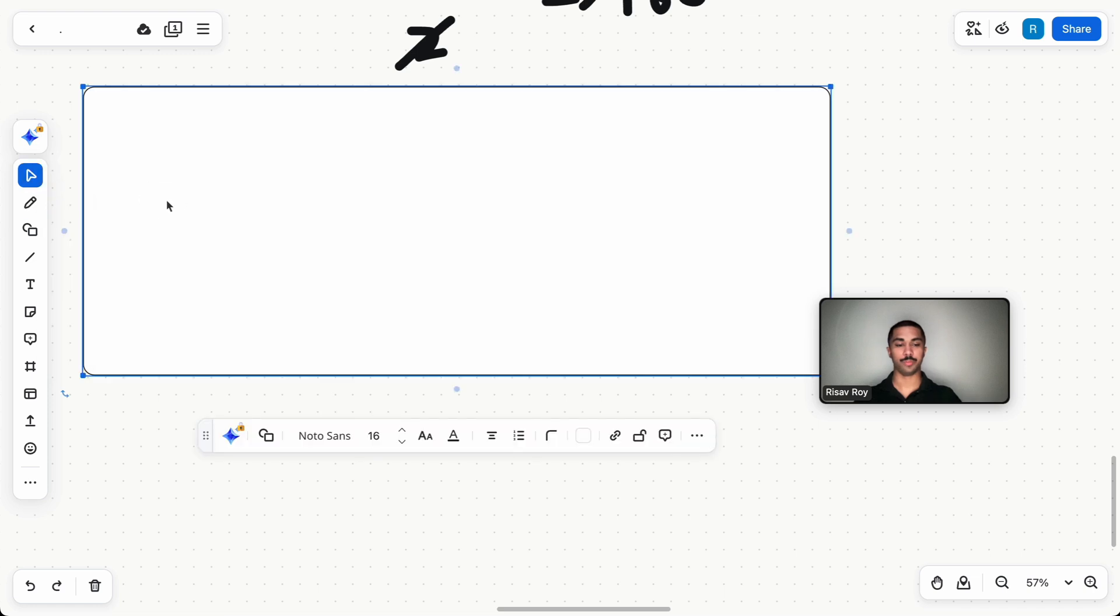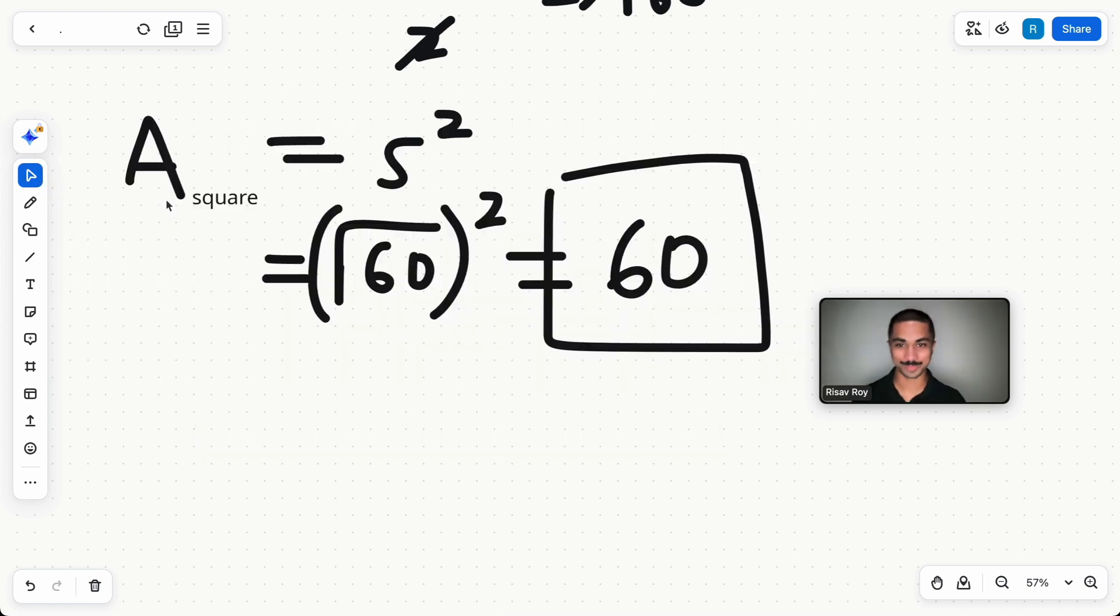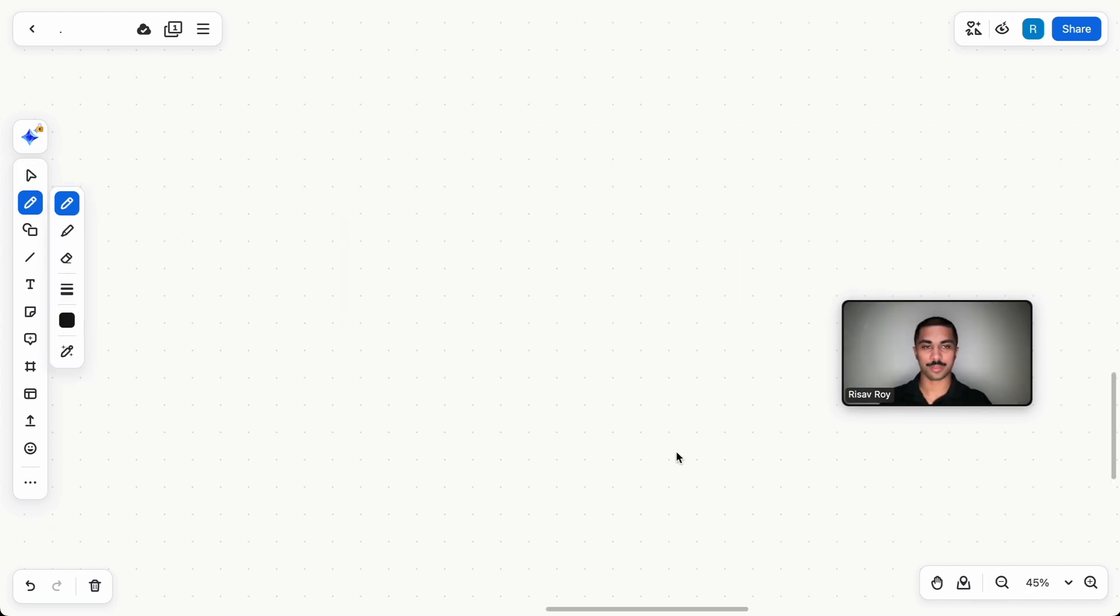To find the area, it's pretty simple. Hopefully you know how to do this part. You take the square root of 60 and square it, because that's how you find the area of a square, which is 60 in this case.